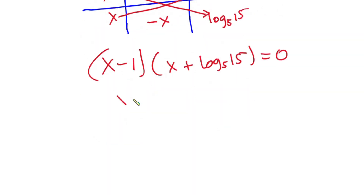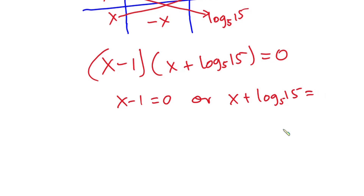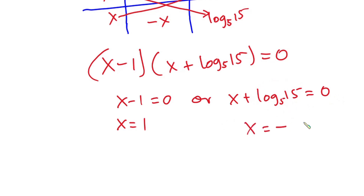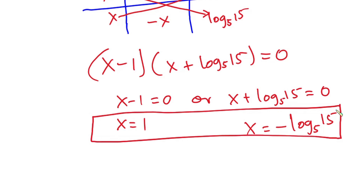So we can say x minus 1 equals 0, or x plus log base 5 of 15 equals 0. From the first equation, x equals 1. Moving the log term to the right in the second gives x equals negative log base 5 of 15. These are the two values of x that satisfy the equation. I hope you found this video useful — please give it a thumbs up, subscribe to the channel, have a nice day, and I'll see you in the next video. Thanks for watching.